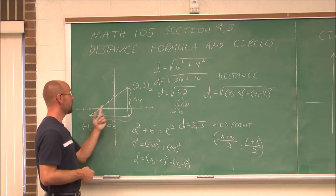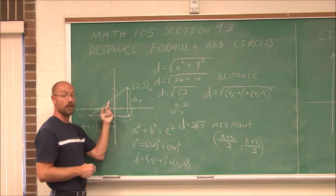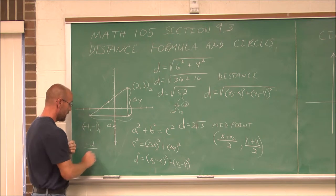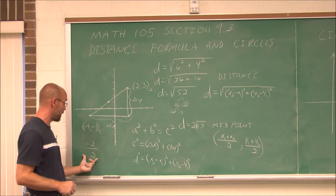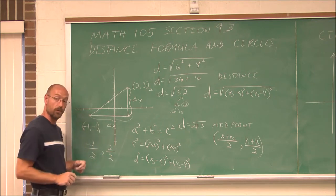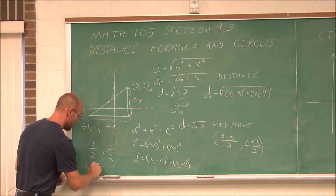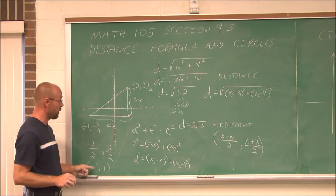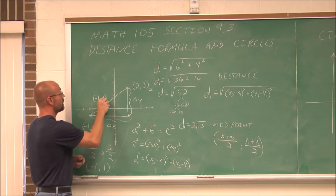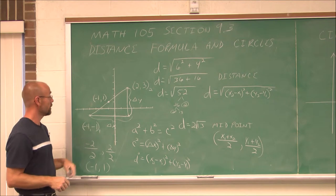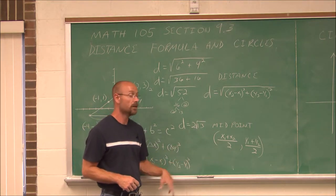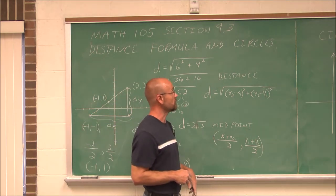Let's actually find the midpoint between (2, 3) and (-4, -1). For the x value: 2 plus negative 4 is negative 2, and since I have two x values, I divide by 2, giving negative 2 over 2. For the y value: 3 and negative 1 gives positive 2, over 2. Simplifying, negative 2 over 2 is negative 1, and 2 over 2 is 1. So the midpoint is (-1, 1) — the average x and average y — the point in between the two points of interest.